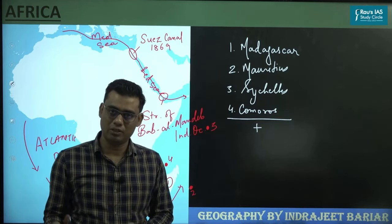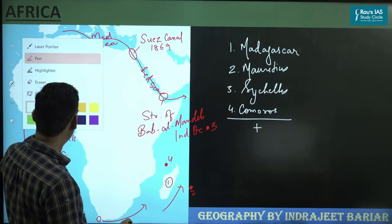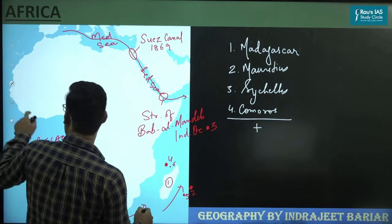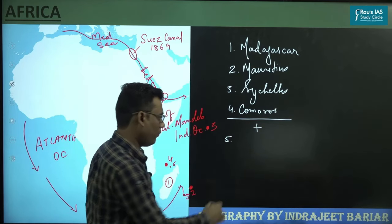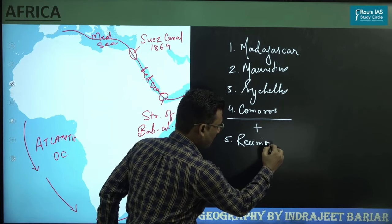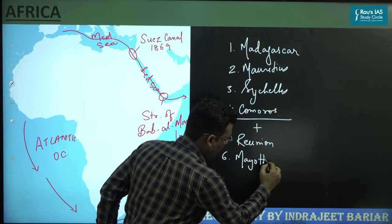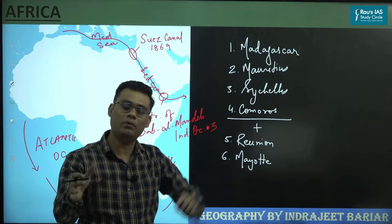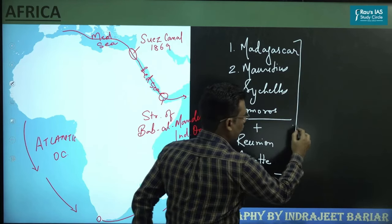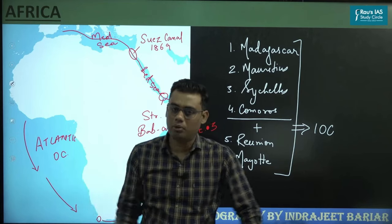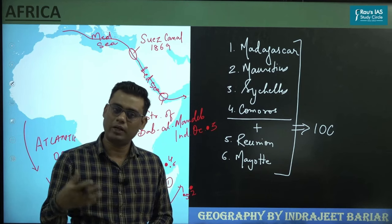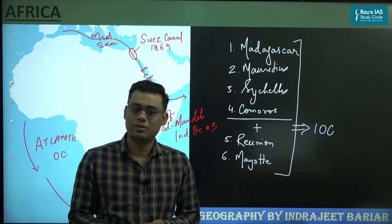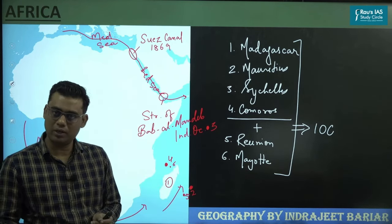To these four sovereign island nations, if we add two French overseas territories — the fifth one is Réunion and the sixth one is Mayotte — both Réunion and Mayotte are French overseas territories. These four sovereign island nations plus two French overseas territories constitute the Indian Ocean Commission, a very important regional grouping. One interesting fact: almost all the islands of Africa are volcanic in origin.